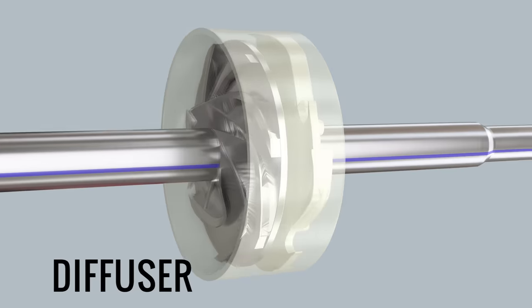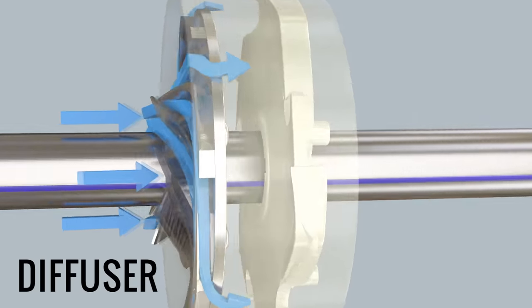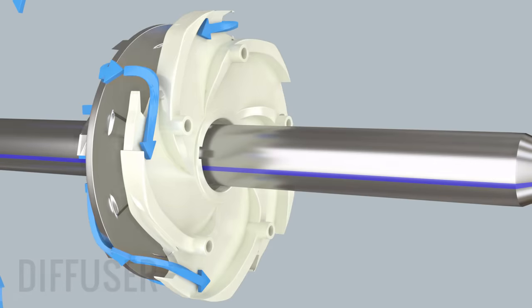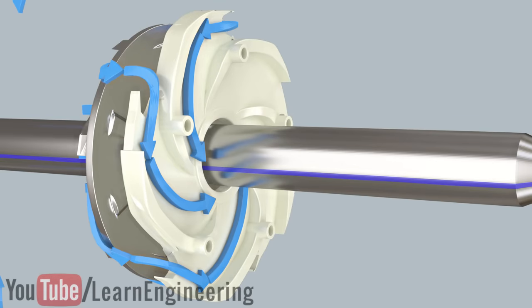You can see how the water flowing from the impeller enters the diffuser. The diffuser then deflects the inlet water and makes it ready for the next impeller stage.